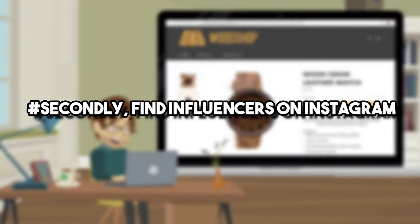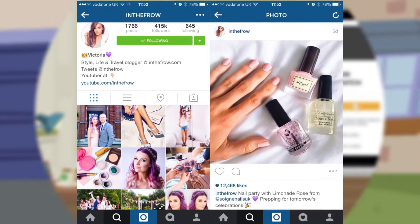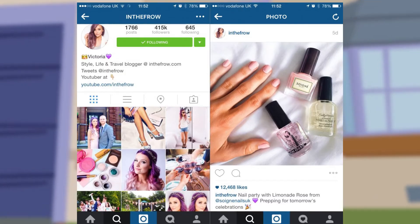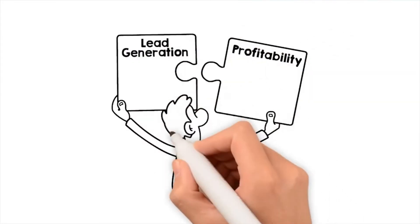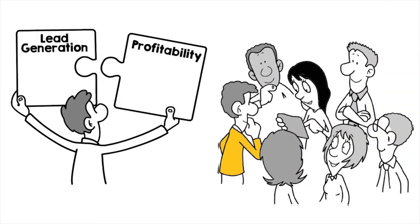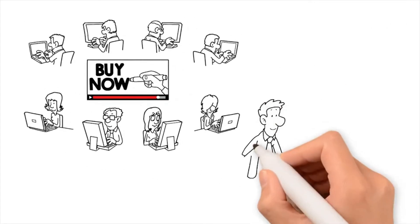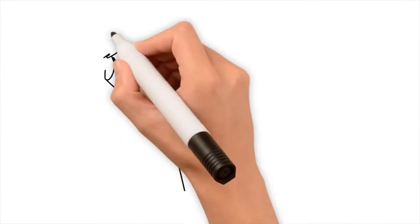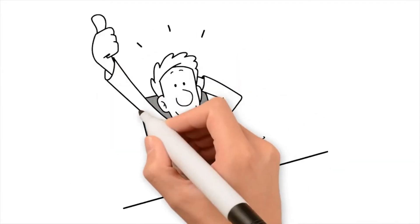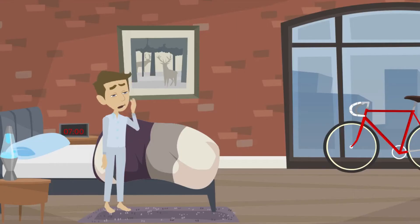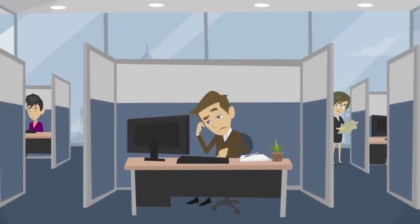Secondly, find influencers on Instagram. The next step is to discover influencers on Instagram and prefer the ones with followers between 10,000 to 100,000. Once you go for an influencer beyond 100,000 followers, they are already getting paid from brand sponsorships, so they will not be open to this revenue share strategy. Also, do not go below 10,000, as once an influencer reaches 10,000 followers, they gain the swipe-up button on their story, which is essential for promoting your product.